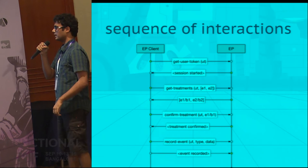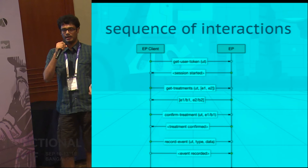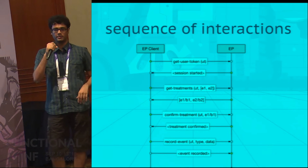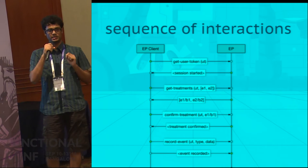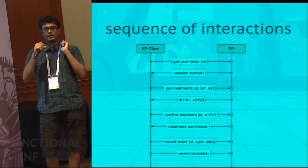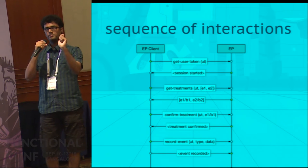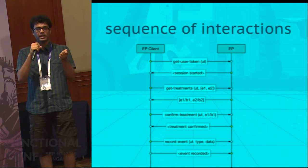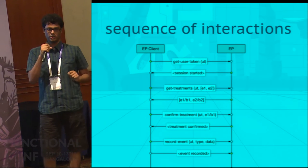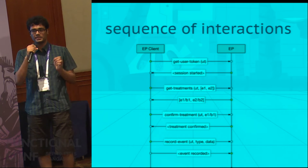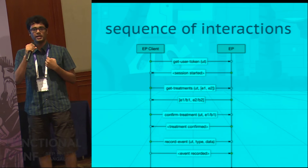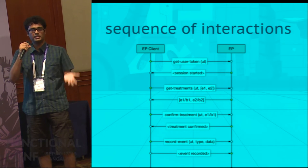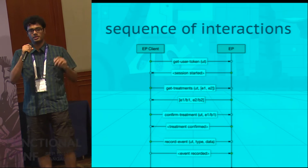Here is an example of the sequence of interactions between you and the experimentation platform. Say you're the client and I'm the platform. First you say there's a new user and provide the session ID. Then you ask for treatments for this user — say you want the checkout page experiment and the red-blue experiment — and I give you the buckets for that user. Then you tell me you actually showed the button to this user; that's the confirmed treatment call. Then you tell me that the user did something interesting — made a purchase — because you later want to measure against it: how many sales dollars has this generated compared to the other treatment, or what's the margin.